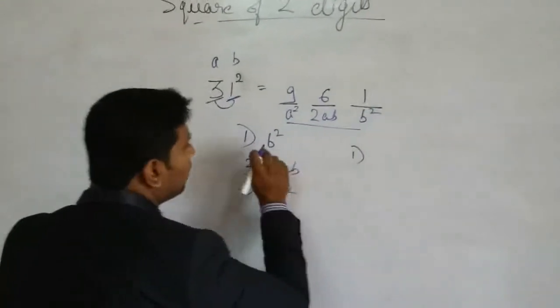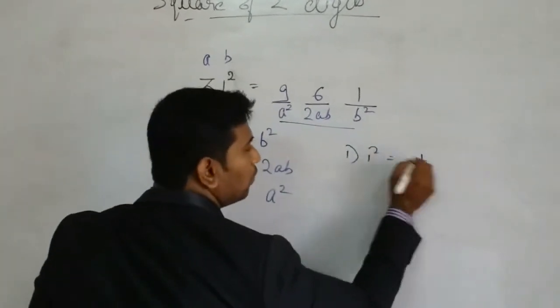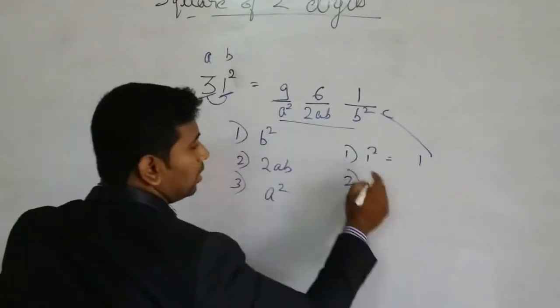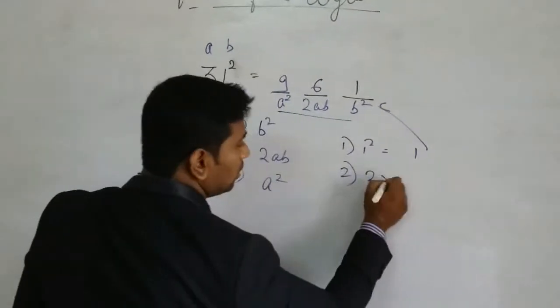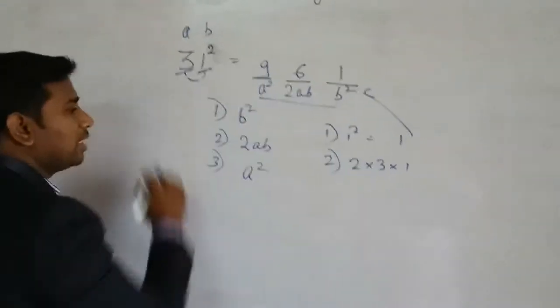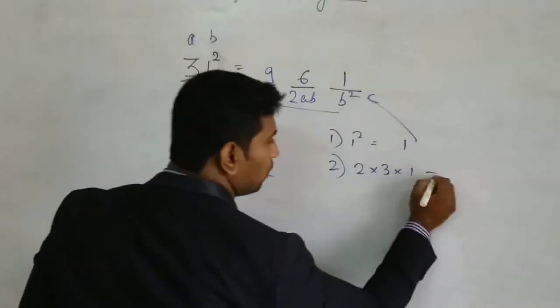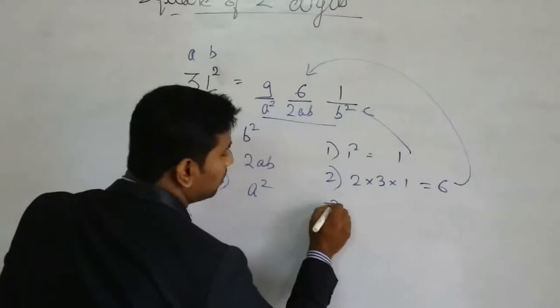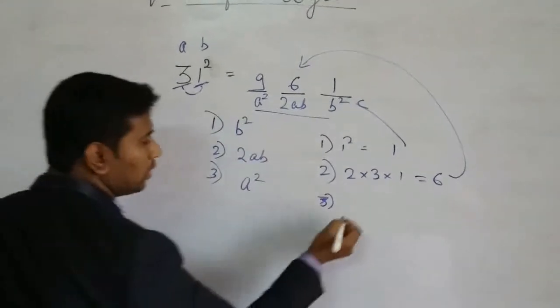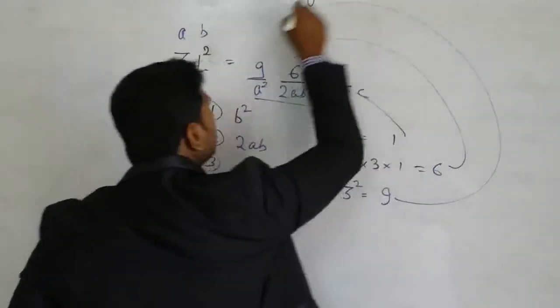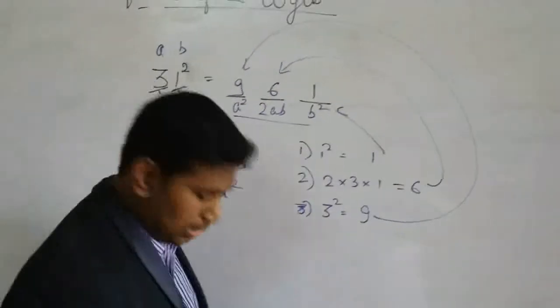Again see what I did. First step, b square. That is what, 1, 1 square, 1. And I have put it here. Second step, 2 into 3 into 1. Both the digits, 3 into 1 and multiply it with 2. So 2 into 3 into 1 is 6. I am put it into here. And then third step, that is a, a square is what, 3, 3 square is 9. I am put it here at this place. So got it.